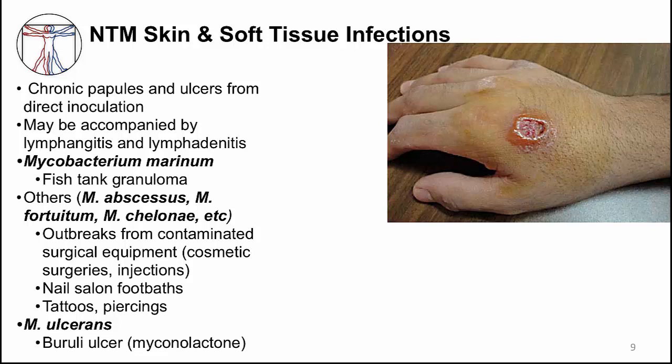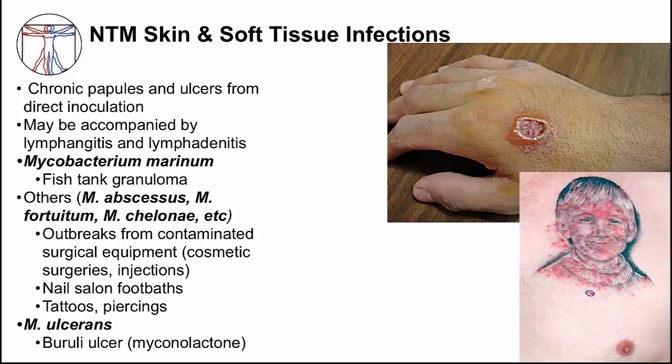Several of the rapid growers — M. abscessus, M. fortuitum, and M. chelonae — can cause infections in a wide range of settings where minor trauma occurs. Skin and soft tissue infections have occurred from contaminated surgical equipment used for cosmetic surgeries, from contaminated water in nail salon foot baths, and even from application of tattoos. In the image, you can see multiple red punctate skin lesions overlying the tattoo, showing where the needle was injected.